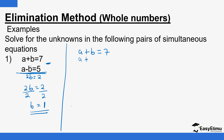So I have a plus b equals 7. Substituting b equals 1: a plus 1 equals 7, so a equals 7 minus 1, which is 6. To verify: a is 6 and b is 1. So 6 plus 1 is 7 — correct. And 6 minus 1 is 5 — also correct. The solutions must satisfy both equations simultaneously, not just one of them.